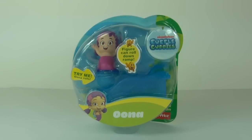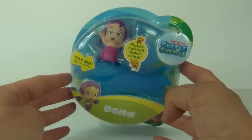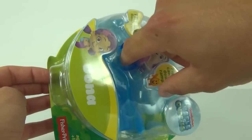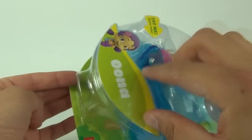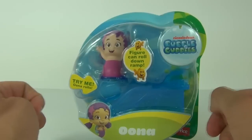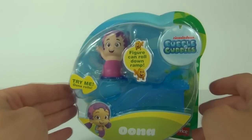Hey guys, welcome to Toy Review TV and a review on another of the Bubble Guppies rollable figures. This time it is Oona, and as said before, you can try these out with your finger if you put it inside the packaging there. You can roll the roller ball underneath the figure.